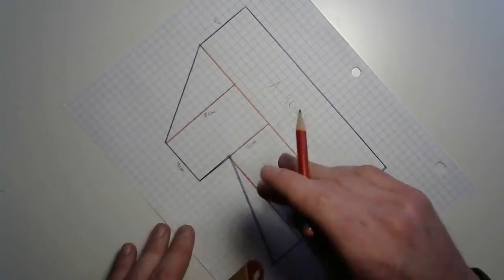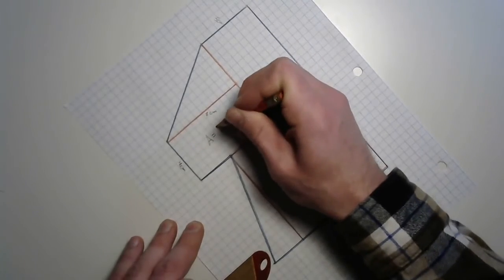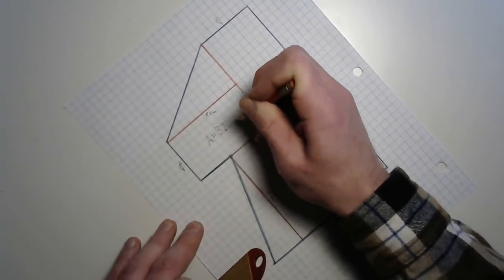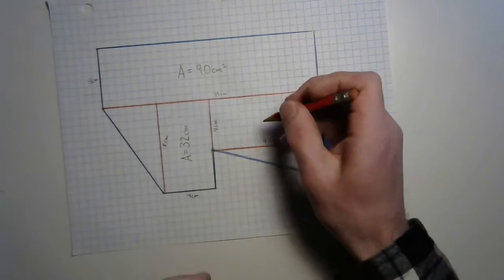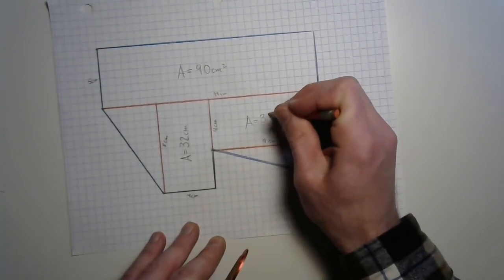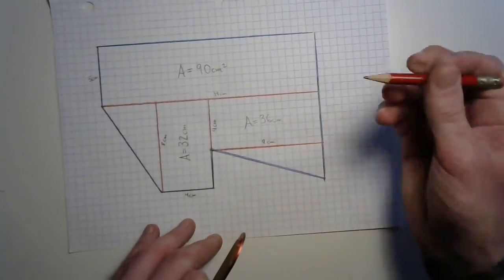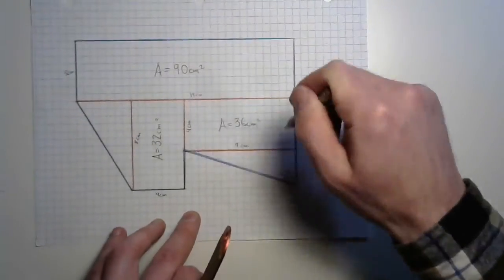How about this other rectangle here? The 8 by 4. Can you figure that one out for me? 32 centimeters squared. Very cool. And how about this one? That one is 4 by 9. Yeah, 36 centimeters squared. Nice work with your math facts. And don't forget to square all of your units.